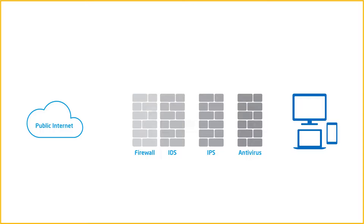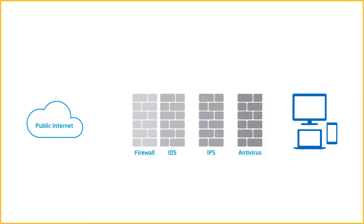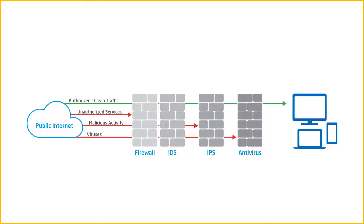Although they can also be standalone offerings, in a typical security architecture the IPS usually sits just behind the firewall and works in tandem with it to provide an extra level of security and catch threats that the firewall cannot catch on its own.